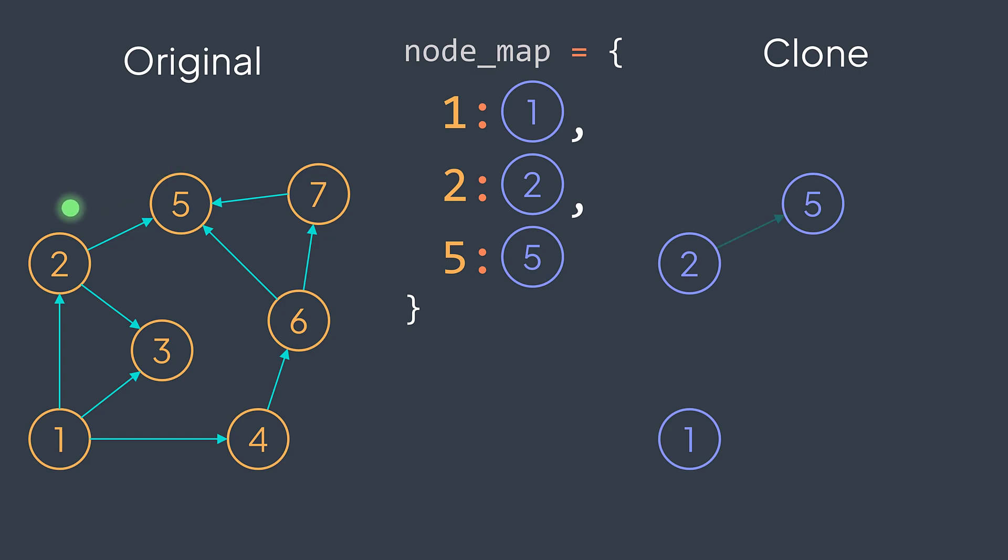We went back to two and we went to three. We don't have three in the hash table, so we create a new node and store it in node map. We went back to two, we went back to one, and we went to three. But now three is in our hash table.